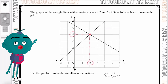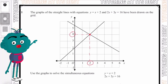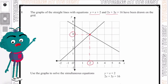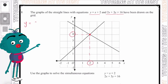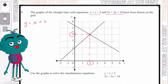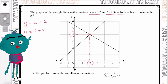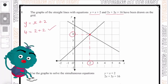Before we move on, let's take a look at the two equations they've given us. The graphs of the straight lines have equations y equals x plus 2, and 2x plus 3y equals 16. We know that y equals x plus 2, and since y is 4 and x is 2, substituting in gives 2 plus 2 equals 4, which is correct.